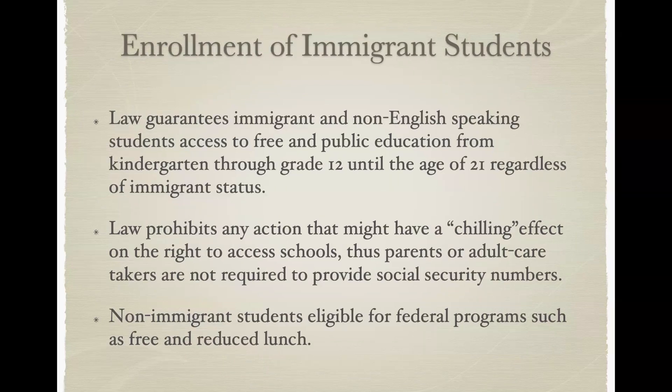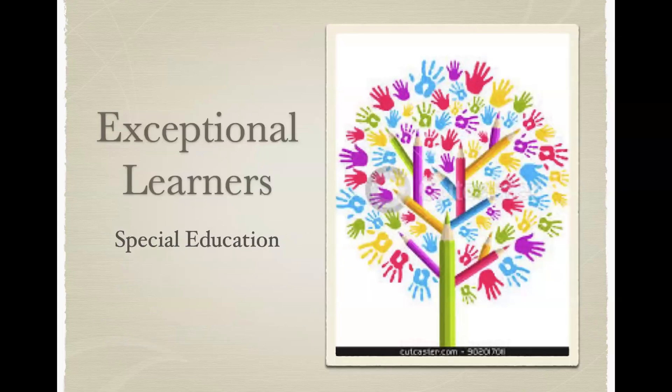How about immigration — immigrant students? How do we enroll them? What do we provide for them so that they can have a successful learning experience? We have a responsibility to all of the learners that we choose to accept in our schools. Exceptional learners, or special education — we do accept exceptional learners in our schools, but we want to be sure that we can provide for their needs as well.